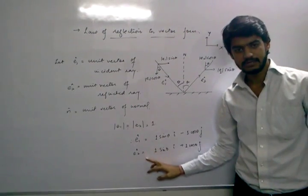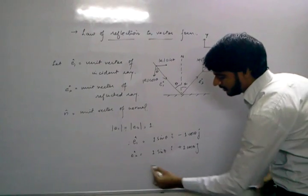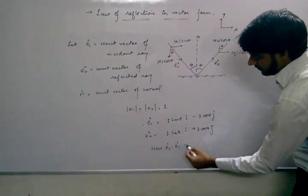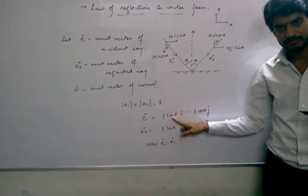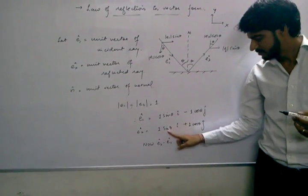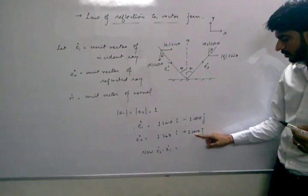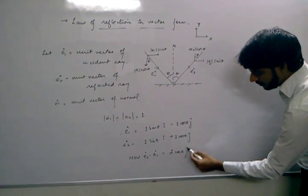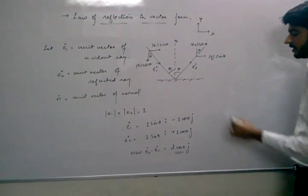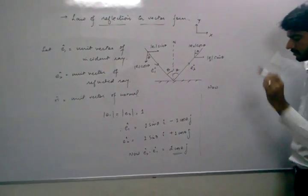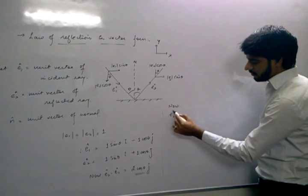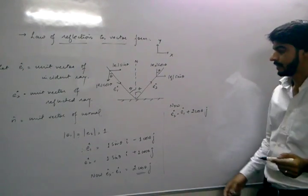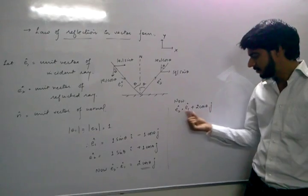Now we will subtract E1 from E2. E2 minus E1 will give us: the two sin theta components cancel — sin theta minus sin theta cancels — but the cos theta terms add, giving 2 cos theta into unit vector ĵ. Therefore, E2 = E1 + 2 cos theta · ĵ. This is the relationship between E1 and E2.